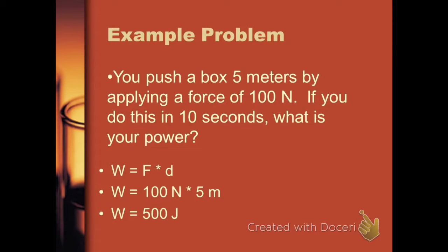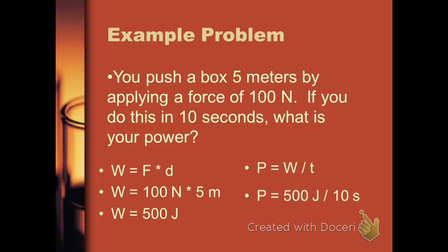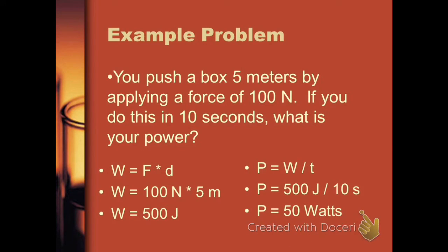Now we can use that answer to figure out the power. Power is the work you've done divided by the time. The work is 500 joules, which we just determined, divided by the 10 seconds it took — giving us 50 watts of power.